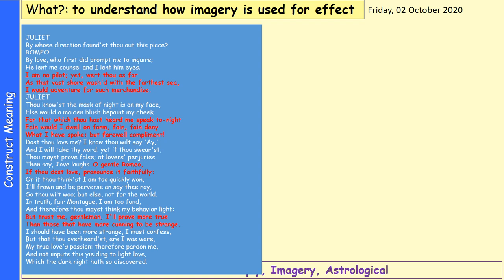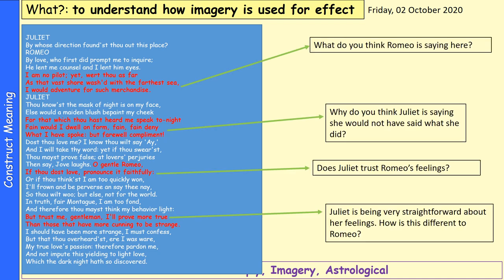In this section, Juliet is saying she's a little bit embarrassed about what he's overheard — that he overheard her say she loves him. She's being quite forthright and upfront with her feelings. She says if he hadn't overheard her, she doesn't know she would have said she loves him so quickly. She says 'thou thinkest I am too quickly won' — she doesn't think she's acted properly, because she should maybe not have been so forthright with her feelings. Pause the video and have a go at answering those questions.